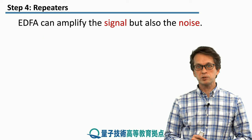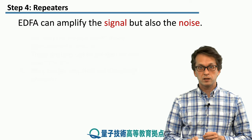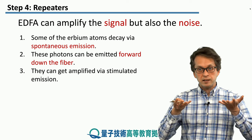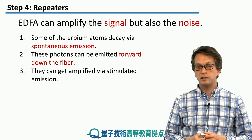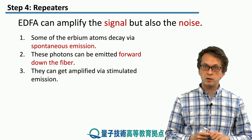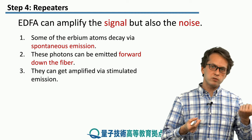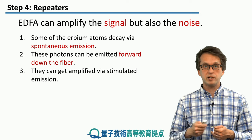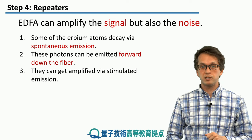But there is one problem with this approach that we have to keep in mind, and that is that EDFAs don't only amplify the signal — they can amplify the noise as well. Some of the erbium atoms will actually decay via spontaneous emission. Remember, we are exciting them, and they're not just waiting around for the signal to come in and cause stimulated emission. Sometimes they decay spontaneously. Photons originating from spontaneous emission are considered noise photons — they're not carrying information about our original signal. But as these photons travel down the fiber, they can travel either backwards, which is not really a problem for us, or they can travel forwards. And then as they do that, they can become amplified via stimulated emission, because there are a lot of erbium atoms sitting in the excited state just waiting for some other photon to come in and cause stimulated emission.